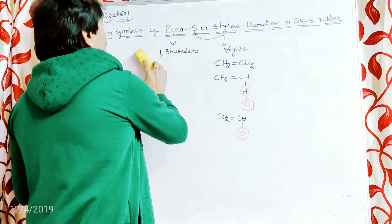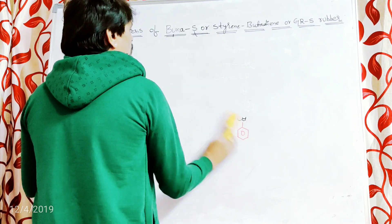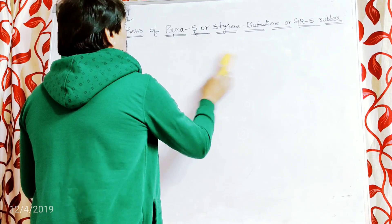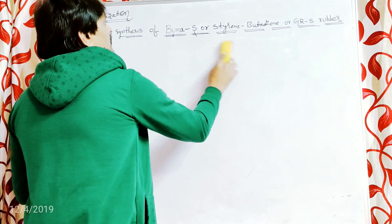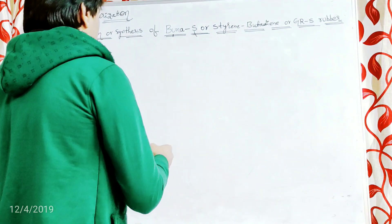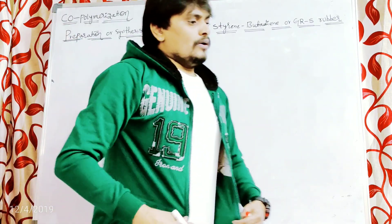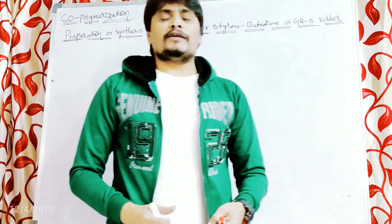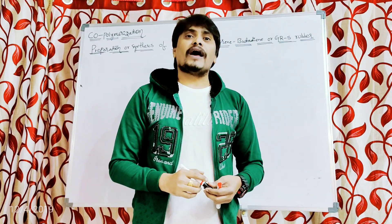So styrene and butadiene are both the monomeric units required for the preparation of BUNA-S rubber, also called styrene-butadiene rubber or GRS rubber. GR stands for Government.